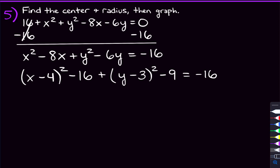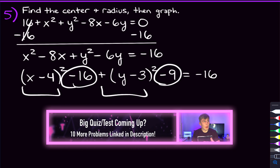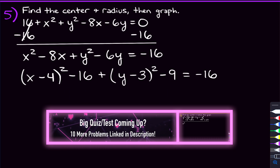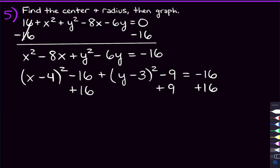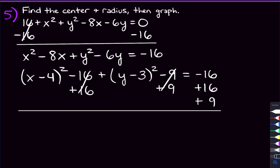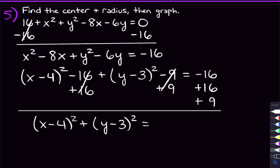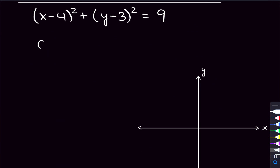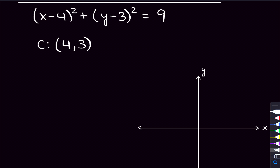We have that negative 16 on the other side, plus we're subtracting 16 and 9 from the left. We need to move those to the other side by adding 16 and 9 to both sides. This gives us: (x minus 4) squared plus (y minus 3) squared equals negative 16 plus 16 plus 9, which is 9. That's the equation in standard form. The center is (4, 3) — not negative 4 and negative 3, because we flip the signs. The radius is the square root of 9, which is 3.